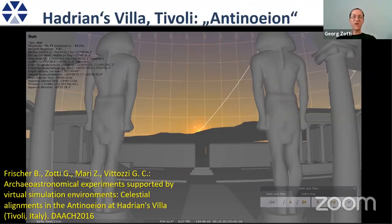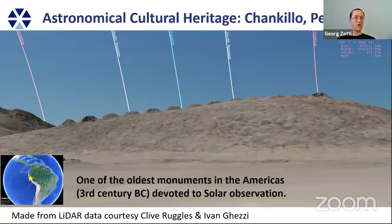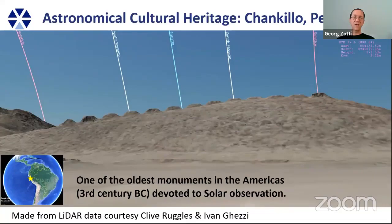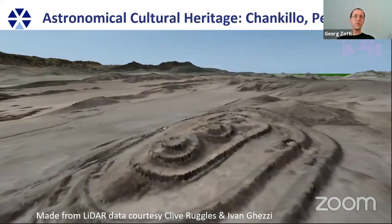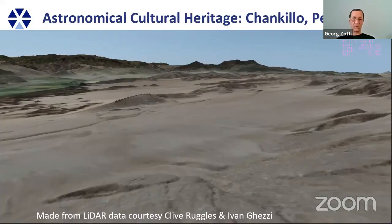Coming to another very famous site — Chankillo is one of the oldest monuments in the Americas devoted to solar observation, from the third century before Christ. Using LiDAR data from Clive Ruggles and Ivan Ghezzi, you can see the central mountain ridge with 13 towers. Standing on one particular location at a temple corner at the end of a corridor, you see the rising sun covering the span of the 13 towers over the course of the year — suggesting a calendrical use for this view. This is captured within Stellarium, showing how large this landscape may be.